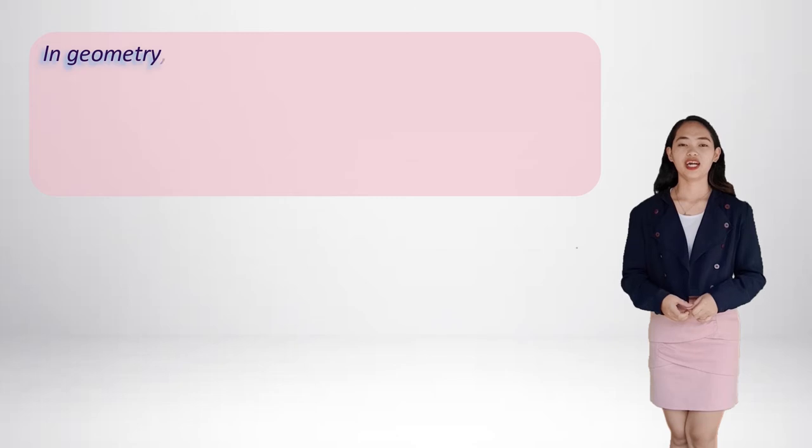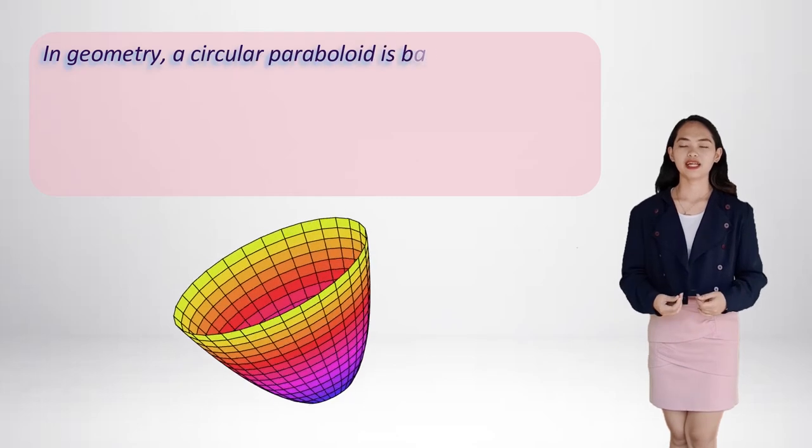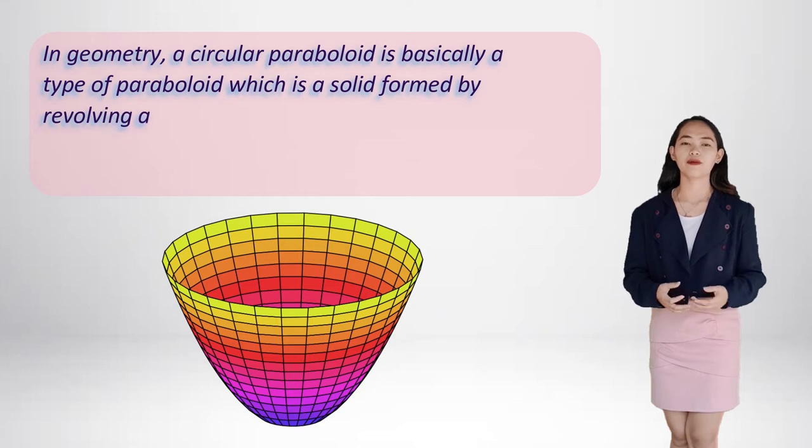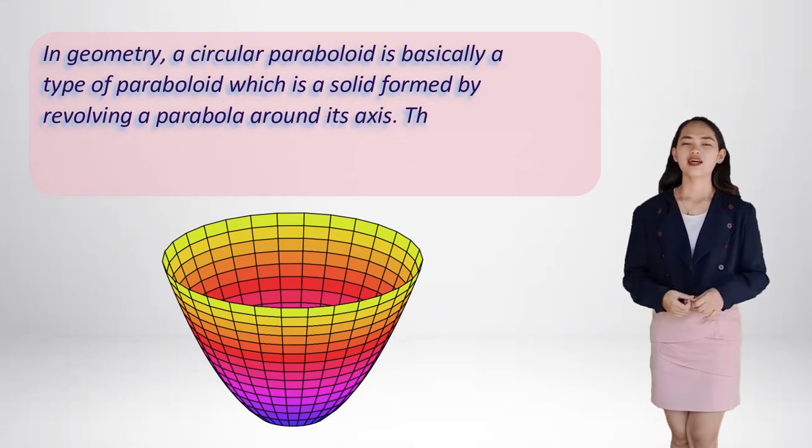Every member of this family of quadric surfaces can be generated by a moving parabola directed by another parabola. In geometry, a circular paraboloid is basically a type of paraboloid which is a solid formed by revolving a parabola upon its axis. Therefore, by definition, a circular paraboloid is a solid of revolution or a solid.